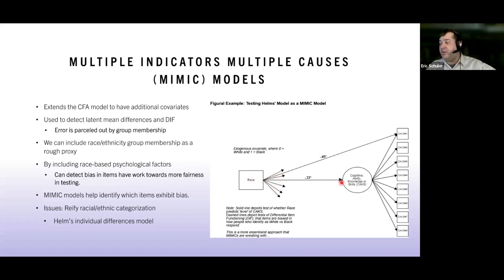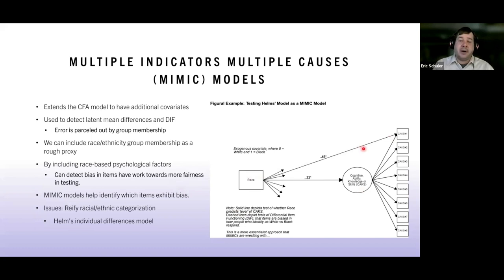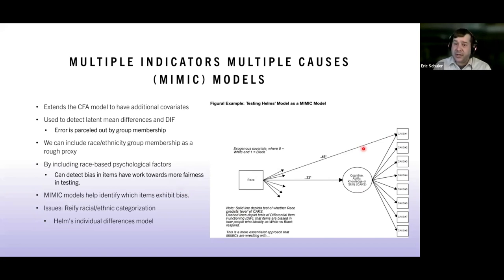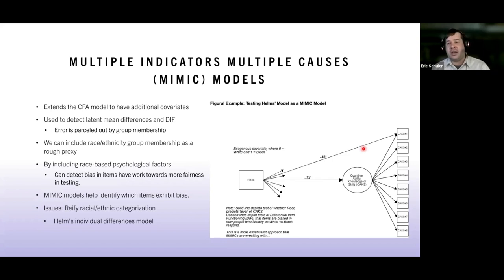Biased items could involve the wording, content, framing, language, or specific examples that create an unfair advantage or disadvantage for a group. When we flag a potentially biased item, we can't definitively say it's biased from statistics alone — we need a committee of experts who know the population and the constructs, who review the items, the wording, and identify whether something is causing unfair interpretation.